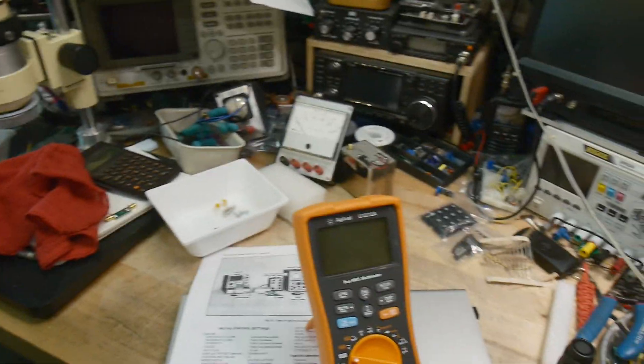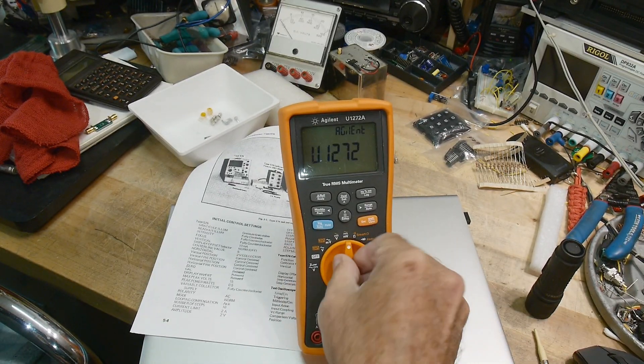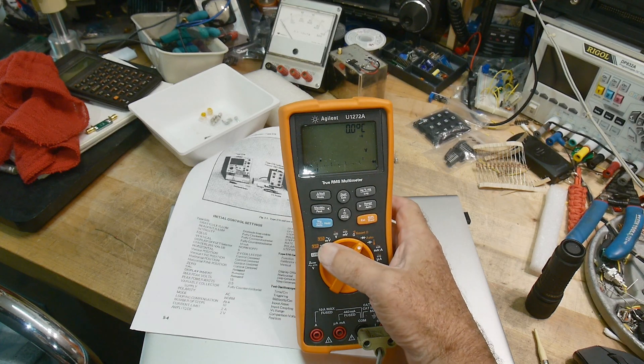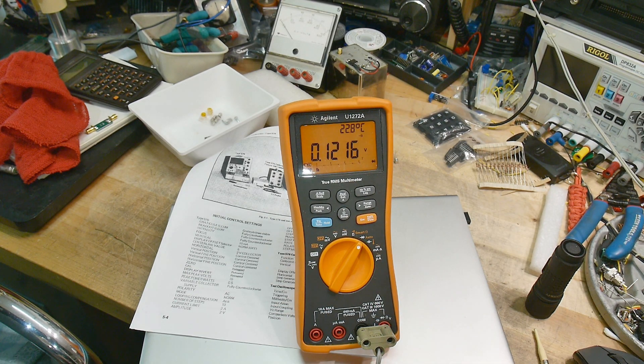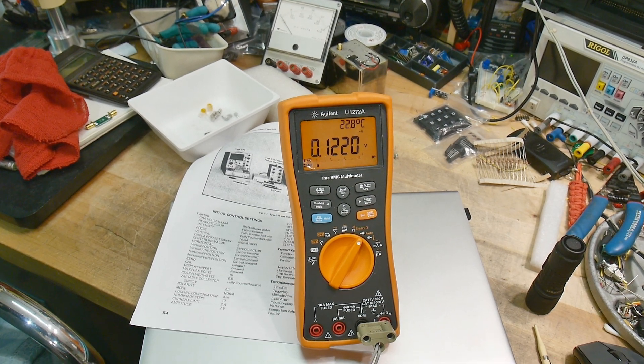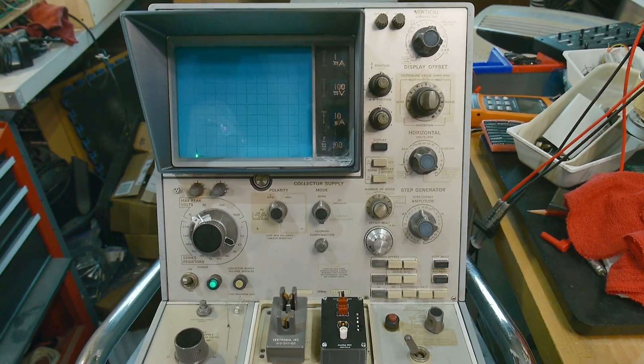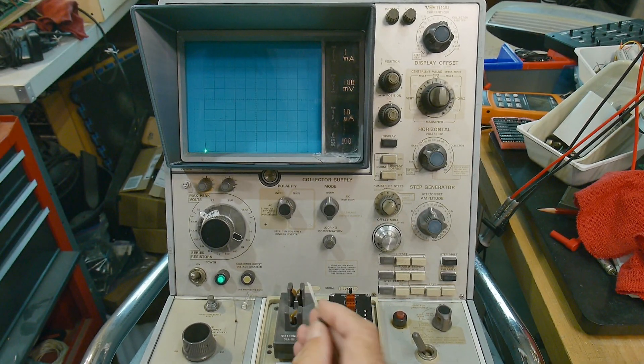Go back over here to the diode checker, turn on the backlight. 0.12 volts. You go wow, 0.12 volts, that's great. Schottkys are really nice.